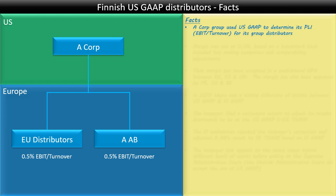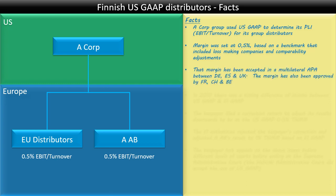Looking at the facts: A Corp used US GAAP to determine its PLI — EBIT over turnover — for its group distributors. The margin was set at 0.5 percent based on a benchmark that included loss-making companies and comparability adjustments. That margin has been accepted in a multilateral APA between Germany, Spain, and the UK. It seemed those were manufacturing countries, and the APA agreed that the distributors for these manufacturers would have a TNMM of 0.5 percent, implying the manufacturers bore the residual profit and risk. The 0.5 percent margin was also approved by the tax authorities of France, Switzerland, and Belgium in different years.